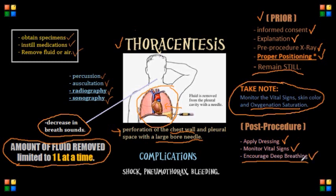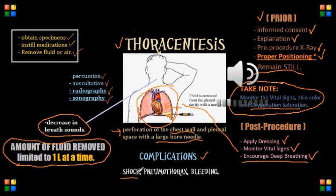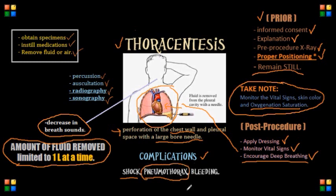Complications from this procedure can include shock — we need to monitor for hypotension and reflex bradycardia, because those are the main symptoms of shock. Pneumothorax could also happen, so we need to monitor the client's signs and symptoms of pneumothorax; the number one symptom you need to know for your NCLEX would be diminished breath sounds. We're also going to have our post-procedure x-ray. Another complication to be aware of would be bleeding — we need to monitor the client's coughing and check for any hemoptysis, or blood in the sputum.